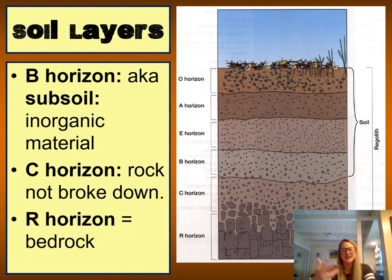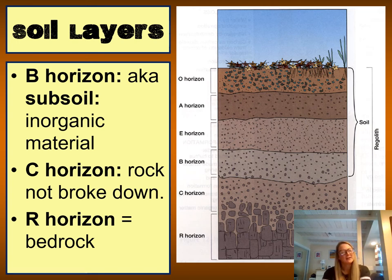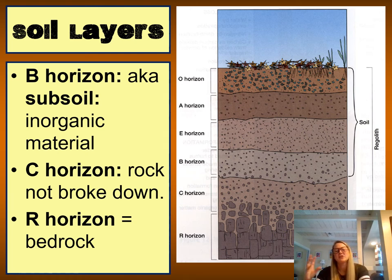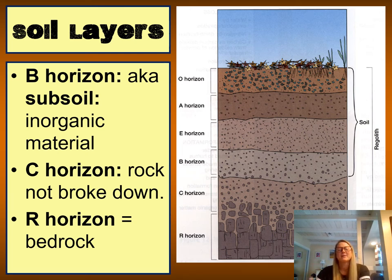Keep going down underneath the A horizon and you get to the B horizon, also known as the subsoil layer, primarily composed of inorganic nutrients. Keep digging and you get to the C horizon, which has a lot of partially broken-down rock, and then the R horizon, which is the bedrock.